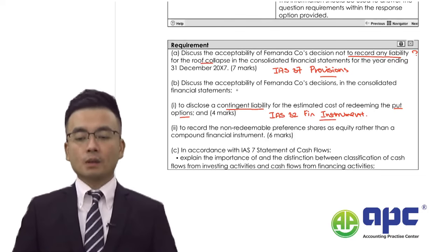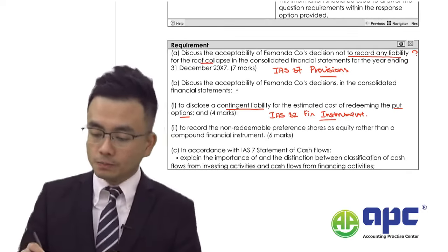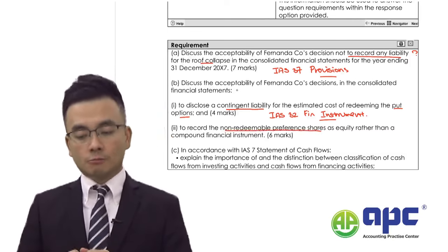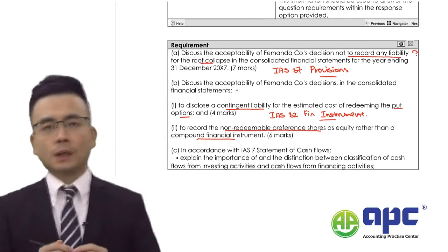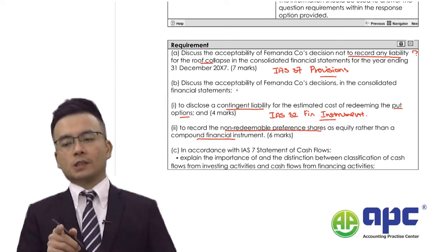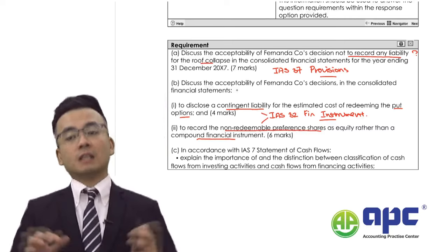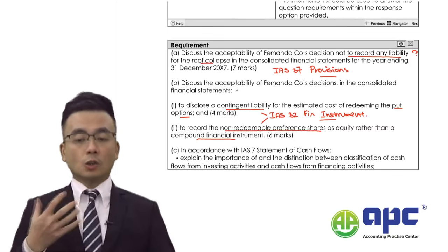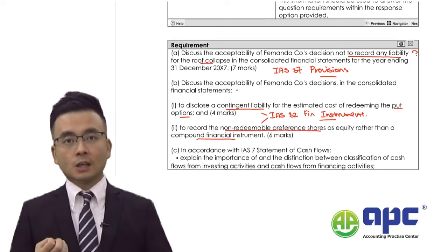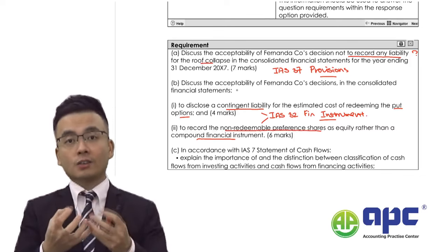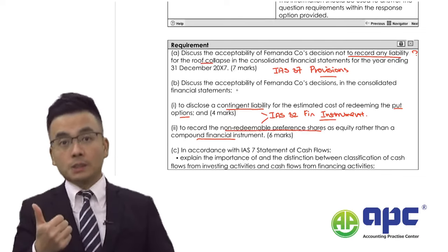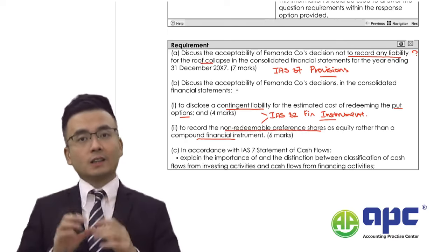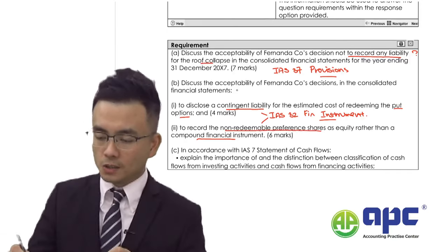Number two: to record the non-redeemable preference shares as equity rather than a compound financial instrument. We are given six marks here. Both of these requirements are related to IAS 32. To recognise a compound financial instrument, we need to see whether a contract contains both a liability and an equity element.